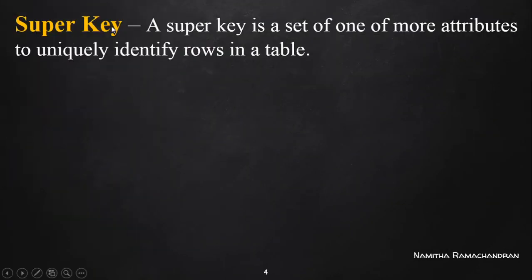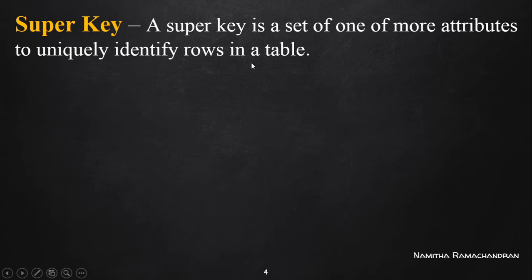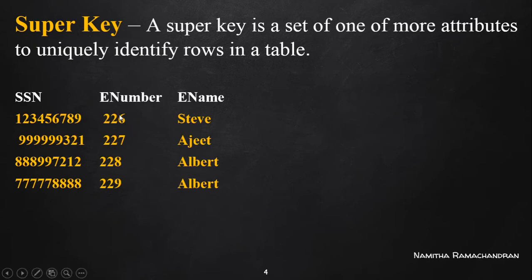A super key is a set of one or more attributes — it may be a single attribute or a composite attribute — used for uniquely identifying rows in a table. Each row indicates a record of a particular entity, also called a tuple. Consider an employee table with three columns representing attributes.